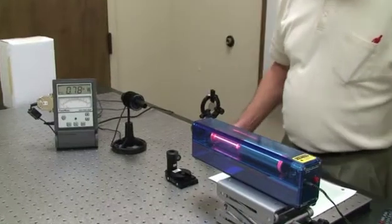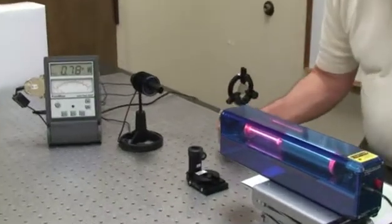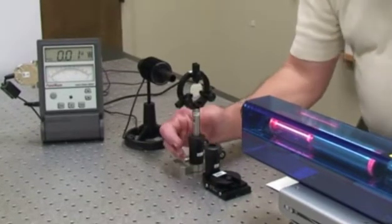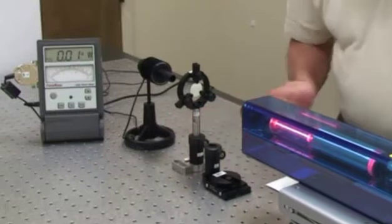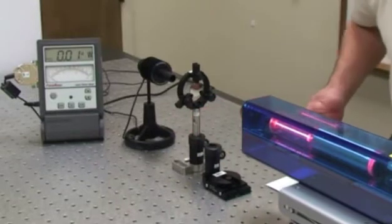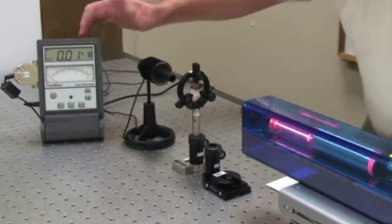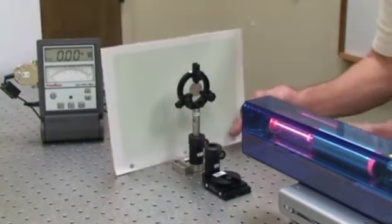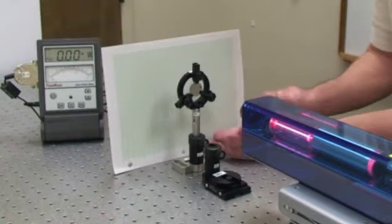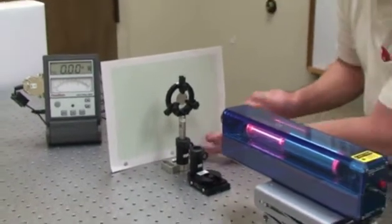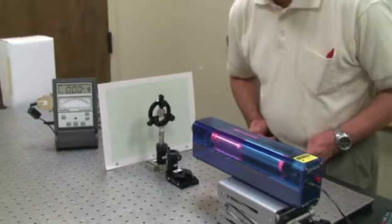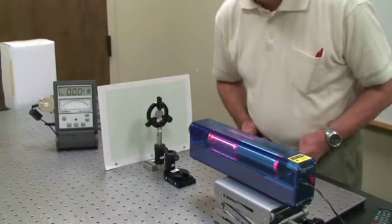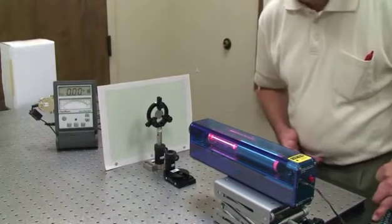Let's use the neutral density filter placed in the beam path. And being careful of reflections, that you don't flash that reflection into somebody's eyes. Notice how it drops the power on the power meter considerably. And now we'll place a piece of graph paper, metric graph paper, in the beam path. And we'll use that to measure the beam diameter. Now, it may be kind of hard to see with the video camera. So let me lower the lights in the room a little bit so that you can see it with the camera.